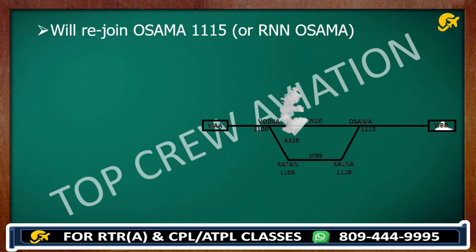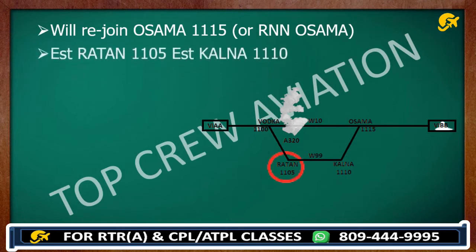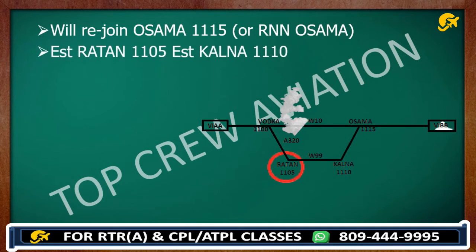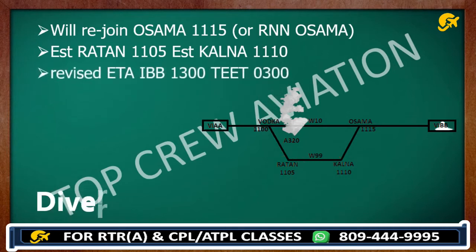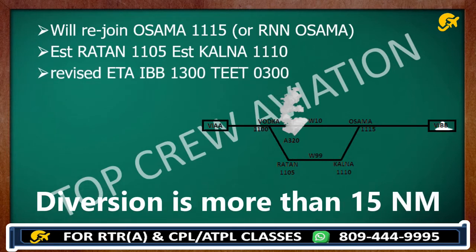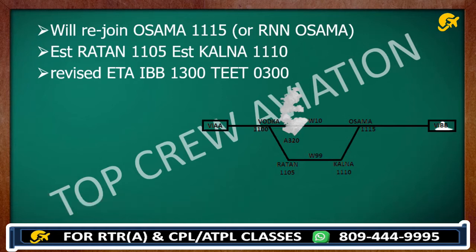Now mention your estimation points. Estimating Ratan 1105. Estimating Kalna 1110. Because your diversion is more than 15 nautical miles, provide a revised ETA: India Bravo Bravo 1300.